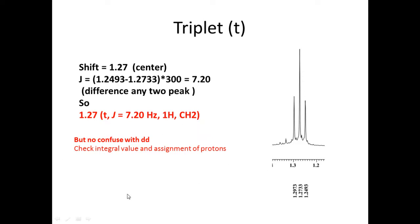So already I said don't confuse with the doublet of doublet. Check the integral values and assignments of protons. Depend upon the compound. Sometimes doublet of doublet with equal J value also look like triplet. In next tutorial I will show you how they create confusion to the observer, doublet of doublet and triplet. So take care about these things, doublet of doublet and triplet.